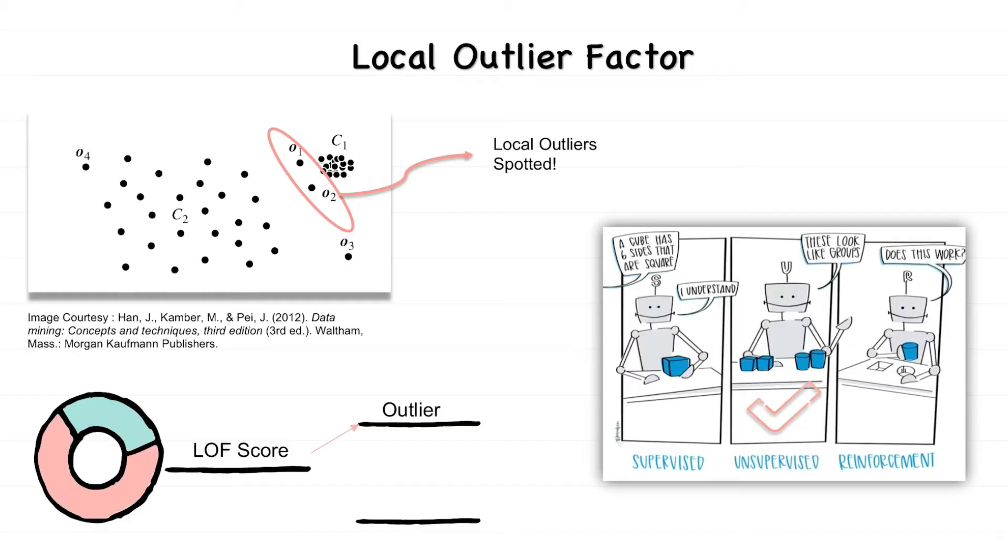Based on a certain threshold, this score then decides if the given point is an outlier or a non-outlier. Before we delve into the steps of the algorithm, we need to commit some terms to memory.